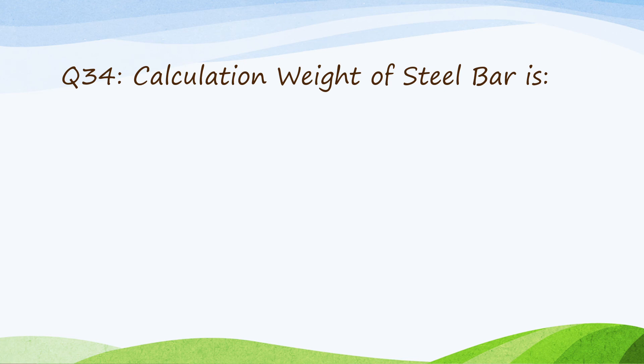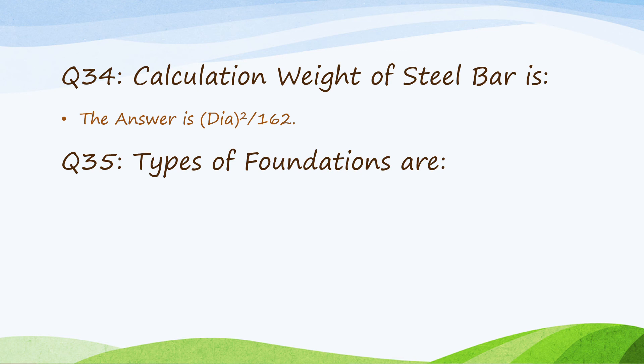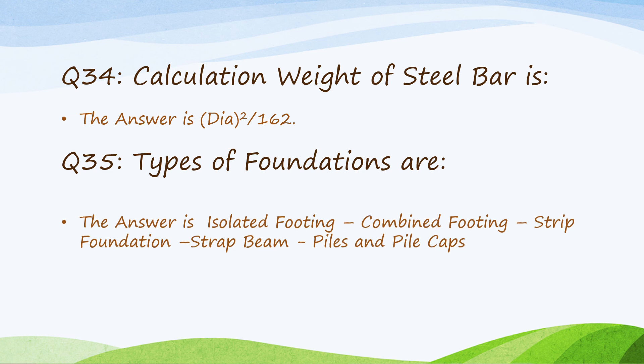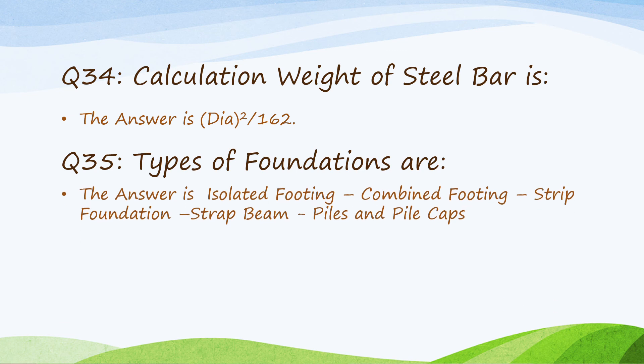Question 34: calculation of weight of steel bar — diameter squared divided by 162. Question 35: types of foundations are isolated footing, combined footings, strip foundation, strap beam, piles, and pile caps.